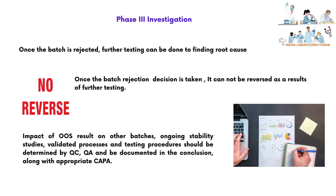As per MHRA guidelines, once a batch is rejected, further testing can be done to find the root cause, but once the batch rejection decision is taken, it cannot be reversed as a result of further testing. The impact of OOS results on other batches, ongoing stability studies, validated processes, and testing procedures should be determined by QC and QA, documented in the conclusion along with appropriate CAPA.